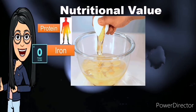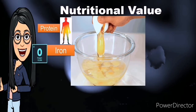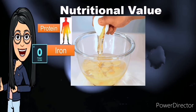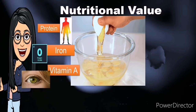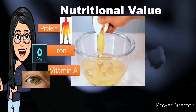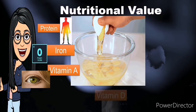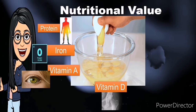Eggs also have iron. Iron is a mineral that our bodies need for many functions; if you have too little iron, you may develop iron deficiency. Eggs are also rich in vitamins like vitamin A, which is key for good vision, healthy teeth, a healthy immune system, and cell growth. They also have vitamin D, E, and B12.